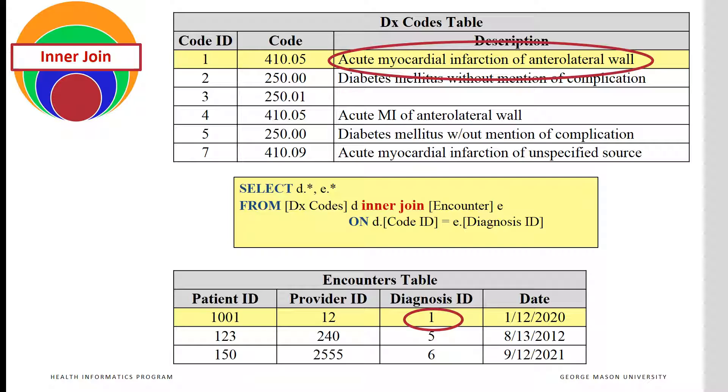Joining the diagnosis codes and the encounter tables will allow us to see a description for each diagnosis. For example, for patient 1001, we read from the encounters table that the diagnosis ID is 1. Then from the diagnosis codes table, we read that the corresponding description is acute myocardial infarction. Diagnosis ID 1 appears in both tables.